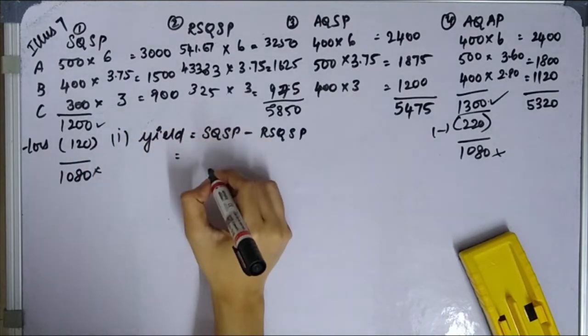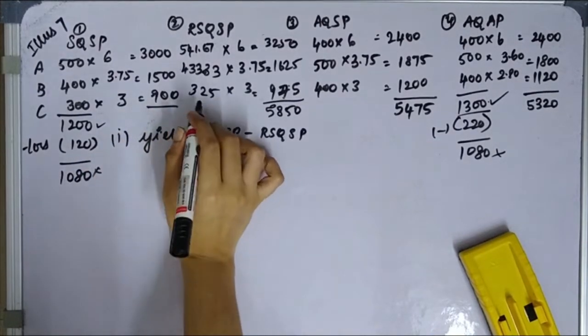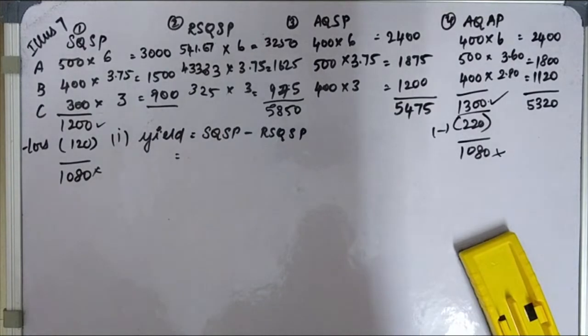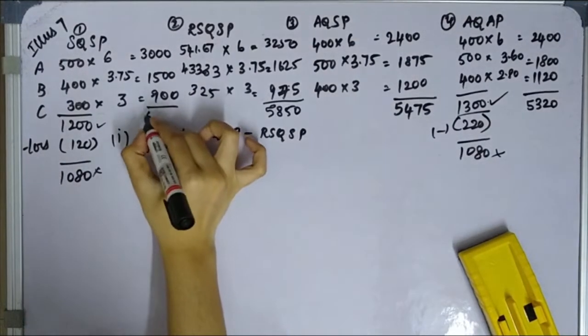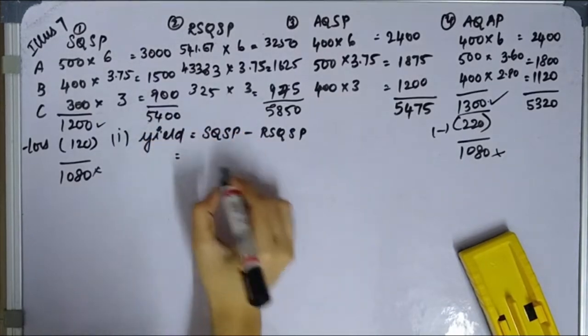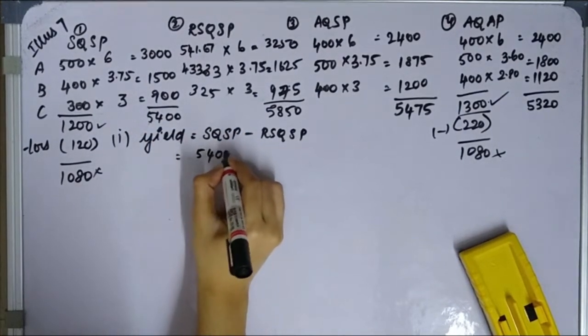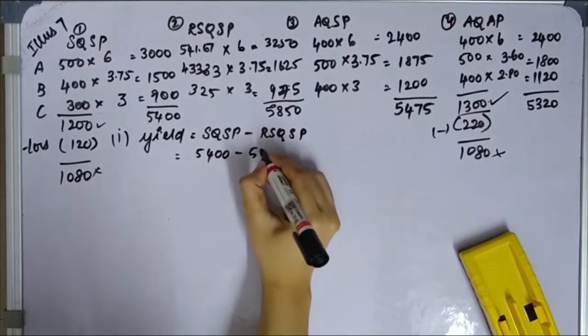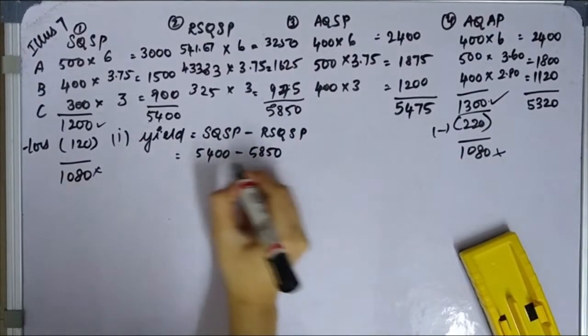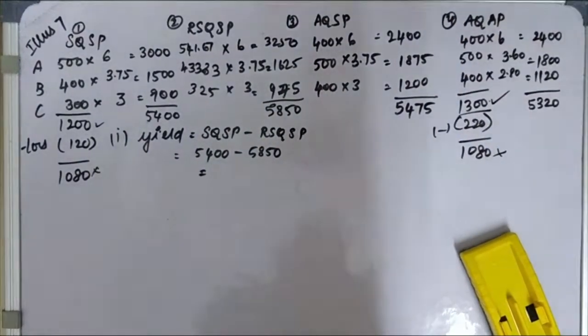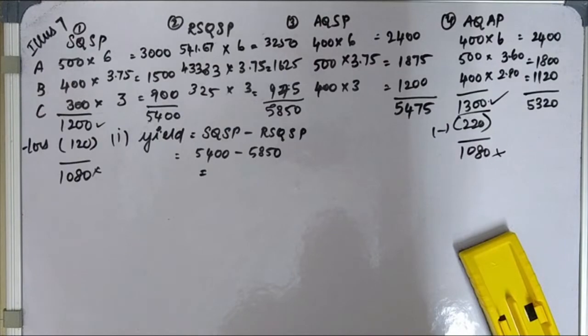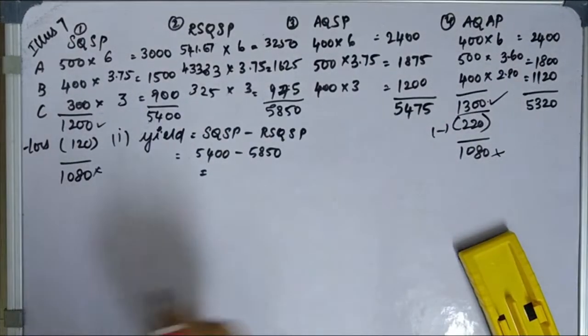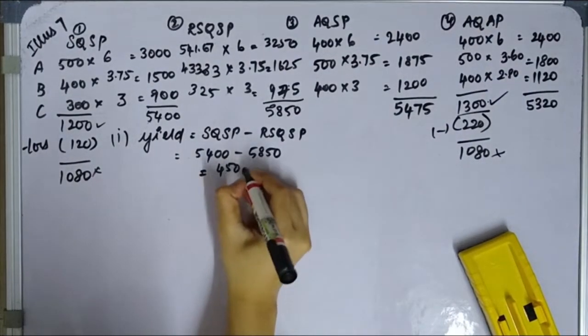SQ SP total is 5,400. So 5,400 minus RSQ SP 5,850, that is 450 as adverse.